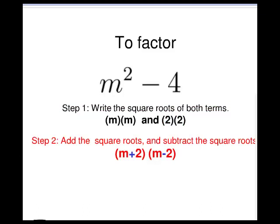Step 2: add the square roots and subtract the square roots for m plus 2 times m minus 2.